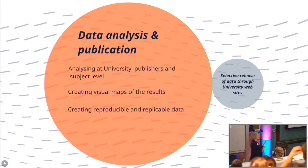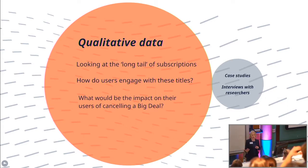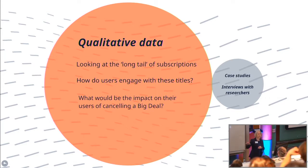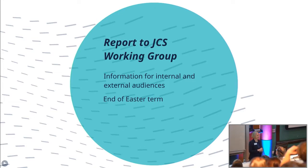Some of the data is actually incredibly useful for us in negotiation, but we don't necessarily want publishers to have access to that. We've been creating visual maps so there will be ways of making it transparent to our community. The qualitative data — which I think is of particular interest — is looking at the long tail of subscriptions: how do users engage with these titles, what happens if you're in a small department? Those journals may be very important to you but are part of the long tail. That will be explored through case studies and interviews with researchers.